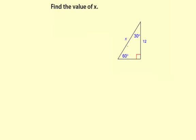Find the value of x. Here we have 12 is given as the long leg for 30, 60, 90. X is given as the hypotenuse.